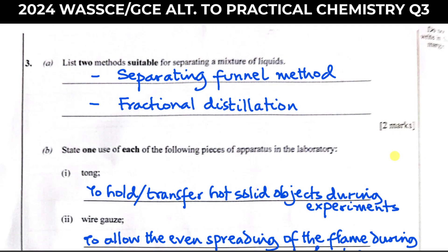Question three is always used to test your understanding or knowledge of the general application of chemistry practical skills. Classroom knowledge can also be tested here, but most times they are practical skills — preparation of gases, separating techniques, oxidizing and reducing agents, laboratory apparatus, and so on. Those are the major areas where questions normally come from in this section of the examination.